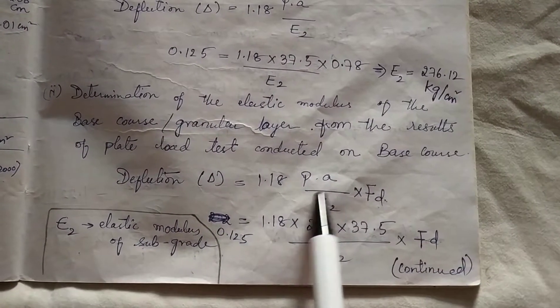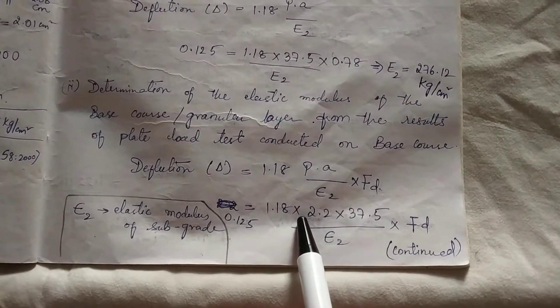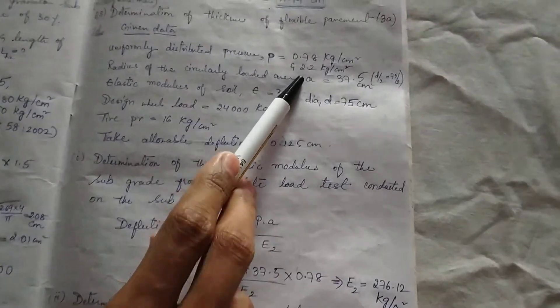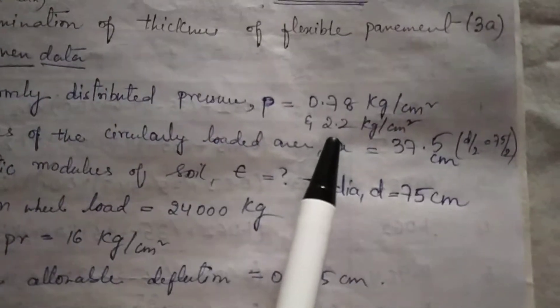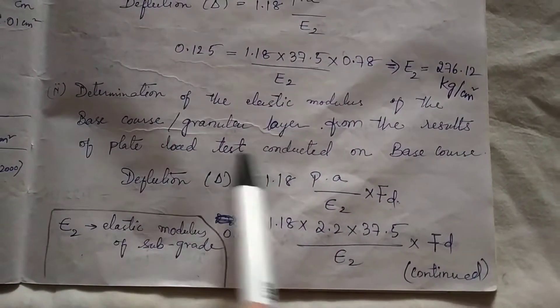Using the formula for deflection: 1.18 PA by E2 into Ft. Here in this granular base course we have to take the second value which is given in the question. This value we have to substitute here for finding out E2 in base course or granular course.